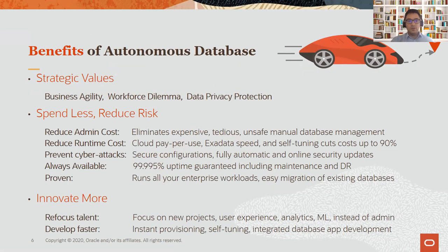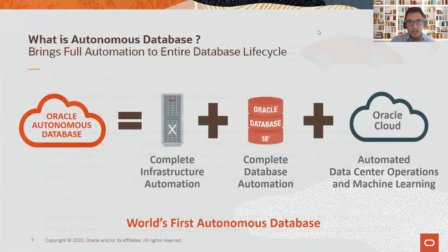To do this, you need a database that has powerful security, powerful agility, and can be used for enterprise applications. We have the Oracle database running on very powerful infrastructure — Exadata — all together inside OCI, the Oracle Cloud Infrastructure, bringing it all together into the autonomous database.